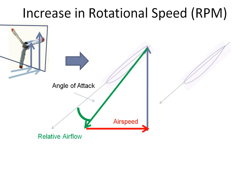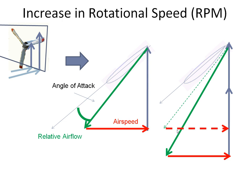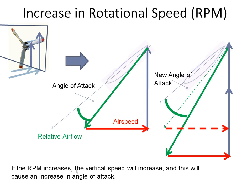Now, what happens if we increase the RPM? Let's reproduce this scenario on the right-hand side — there's the prop chord line, the vertical speed, and the horizontal speed, giving us our original angle of attack. But if we increase the rotation speed, the vertical component will get bigger. Our airspeed stays the same, and our resultant relative airflow shifts. Looking at the angle of attack between the chord line and the relative airflow, we can see it has now grown. So if RPM increases, the vertical speed increases, and this causes an increase in the angle of attack.